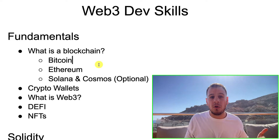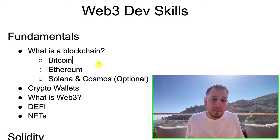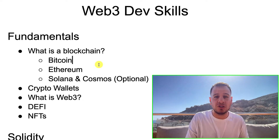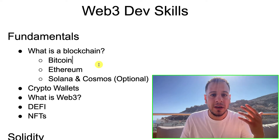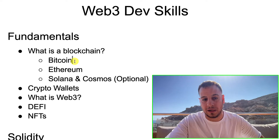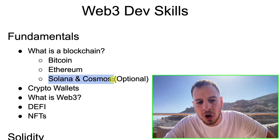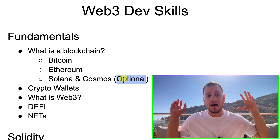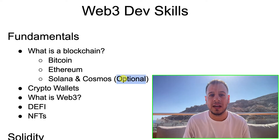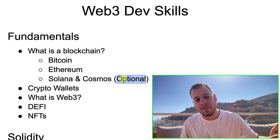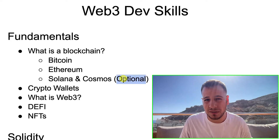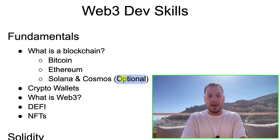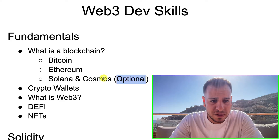You can actually start programming apps on other blockchains like Fantom, Polygon, Arbitrum, or Optimism, because all these blockchains are very similar to Ethereum, as well as BSC — it's all EVM compatible. You can also learn about Solana and Cosmos, but this is optional because these are built with different technology, not EVM. In this tutorial, we're going to focus on EVM development.